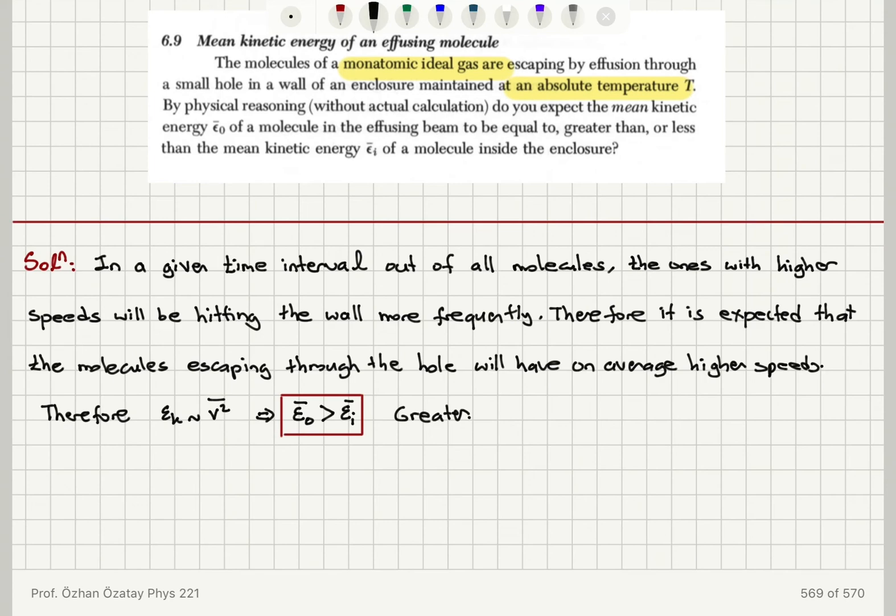However, when you think about the molecules that will hit the walls more frequently, those will be the ones that have on average higher speeds. So when we look at the effusing beam, we will find that the molecules that are coming out of the hole will on average have a higher speed and higher kinetic energy.